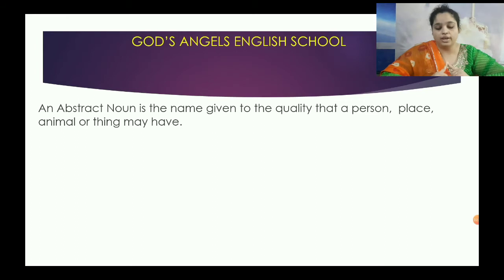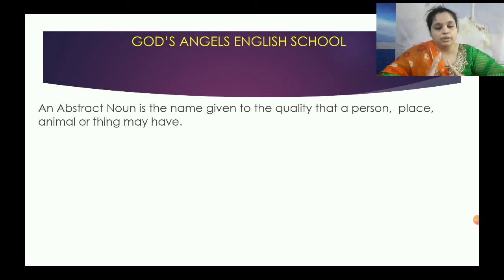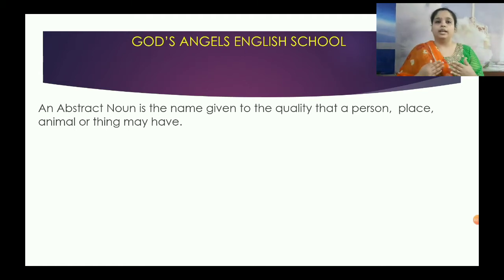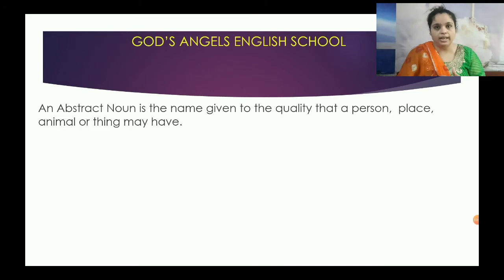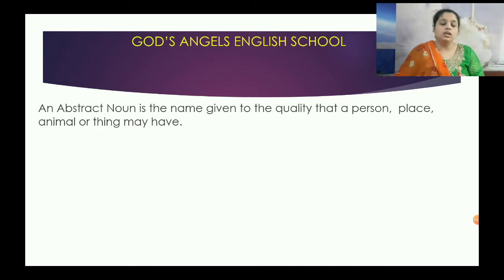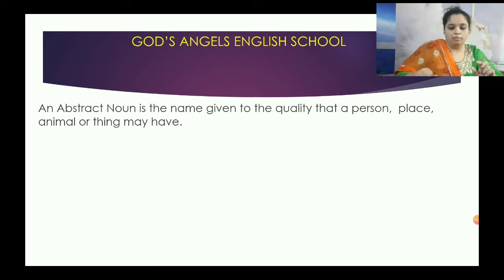Now, abstract noun. An abstract noun is the name given to the quality that a person, place, animal, or thing may have. Jo bhi quality kisi insan mein, animal mein, place mein, thing mein hogi, ush quality word ko abstract noun bolte hai.